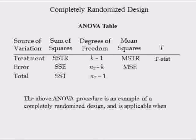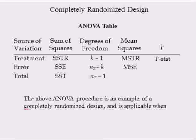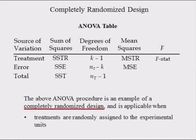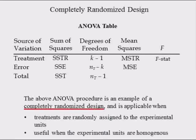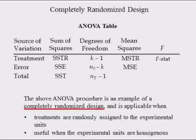The above ANOVA procedure is an example of a completely randomized design. It is applicable when treatments are randomly assigned to the experimental units and is useful when the experimental units are homogeneous.